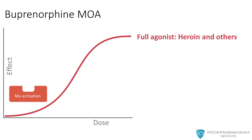When exogenous opioids, like heroin, are ingested and enter the brain, they will also activate the same receptors, producing the same results. Because heroin is a full mu-opioid agonist, at some dose the receptors are fully activated to a theoretical 100% maximal effect.